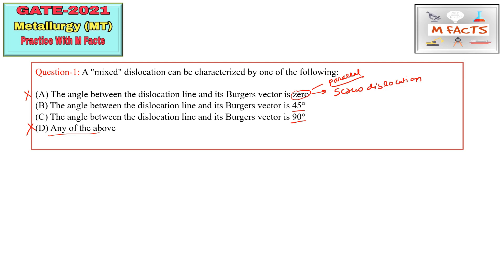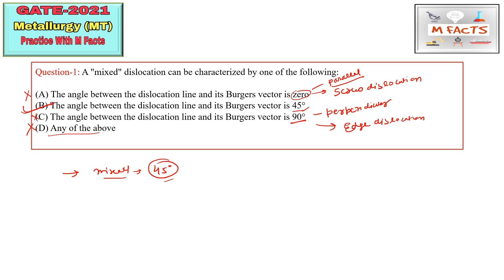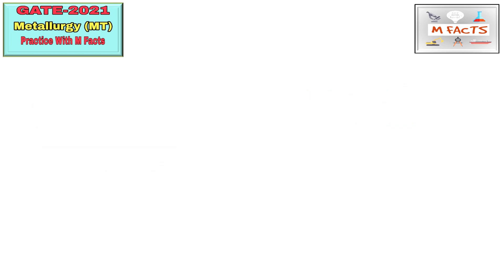Option C — angle of 90 degrees, meaning perpendicular — corresponds to edge dislocation. In many materials, dislocations are found where the dislocation line and Burgers vector are neither perpendicular nor parallel; these are called mixed dislocations, and they can have an angle of 45 degrees. Therefore, option B is the correct answer.